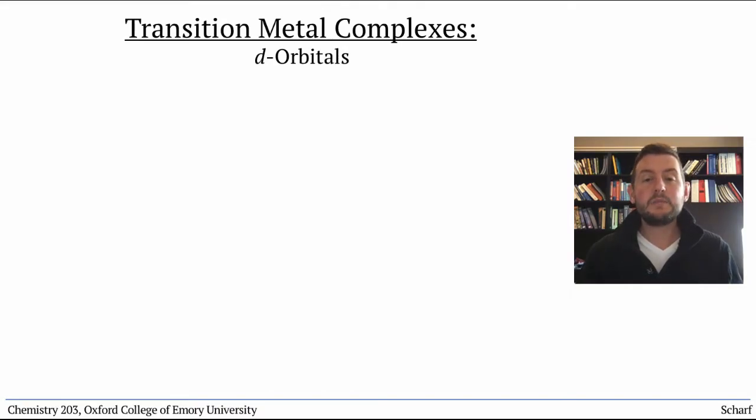Every transition metal has five valence d-orbitals. They're called the dxy, dxz, dyz, dx² - y², and dz² orbitals. They look like this.